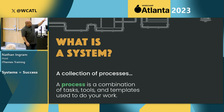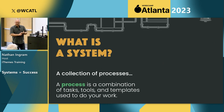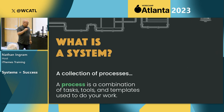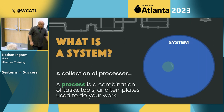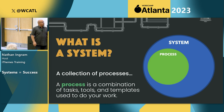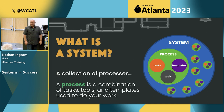If a system is a collection of processes, what is a process? A process is a combination of tasks, tools, and templates that you use to do your work. A system is a collection of processes. A process is some combination of tasks, tools, and templates. And you might have many processes inside of a system.